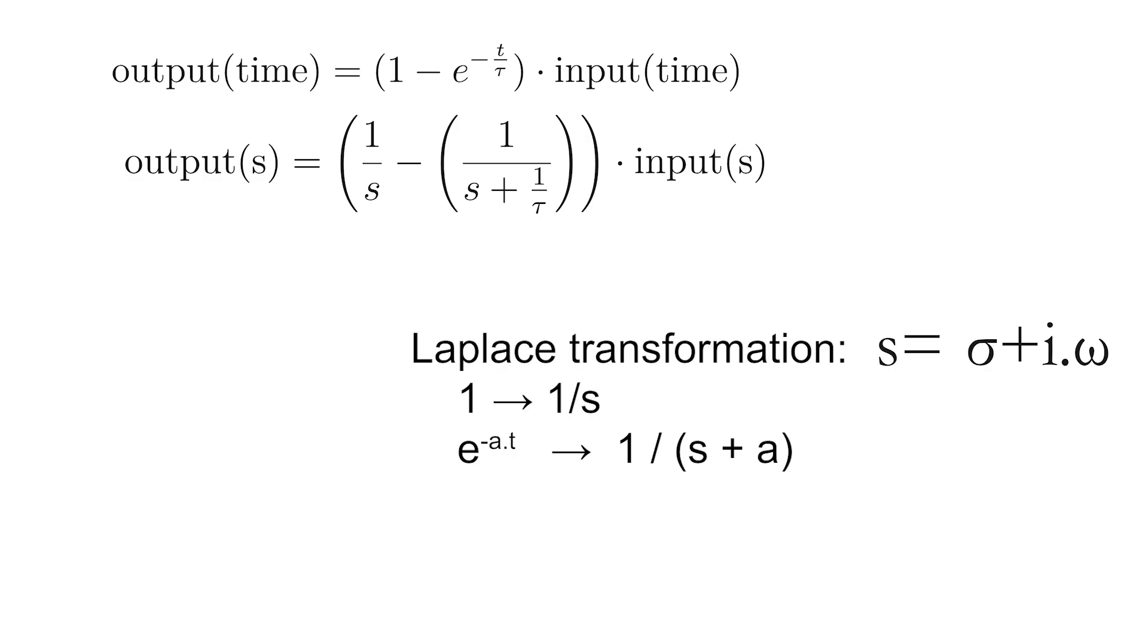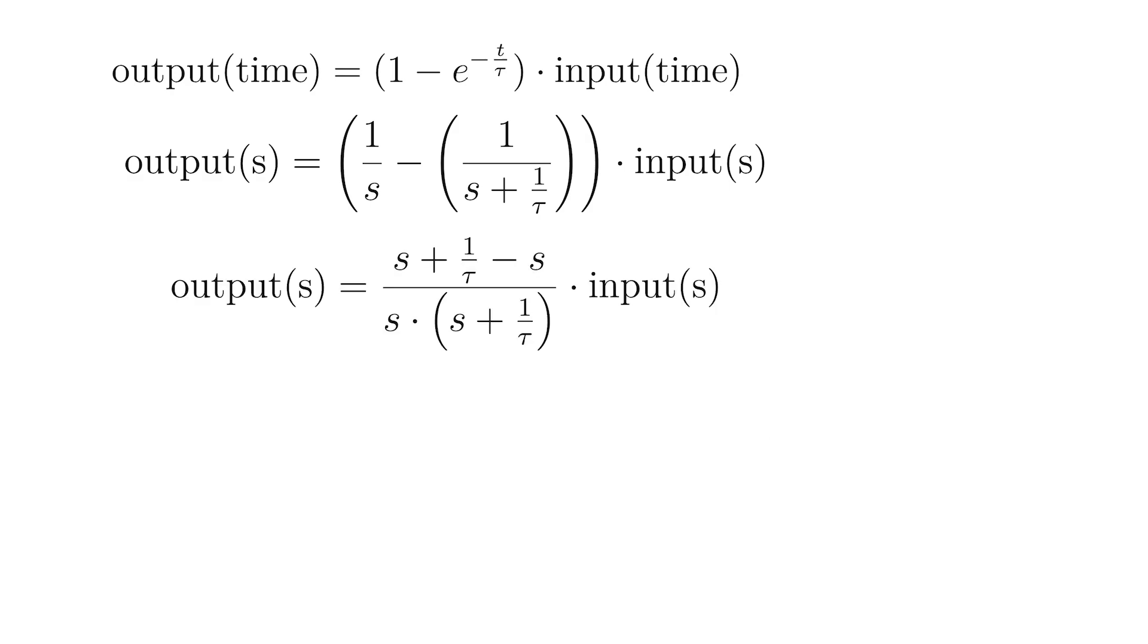Rewriting the equation a bit gives you a very simple transfer function. You can still get rid of the input divided by s, because this represents a unit step input, which was considered for this example. In reality, you can have any input that you want,